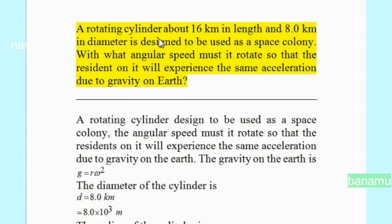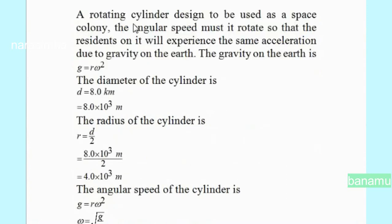A rotating cylinder about 16 km in length and 8 km in diameter is designed to be used as a space colony. With what angular speed must it rotate so that the residents on it will experience the same acceleration due to gravity on Earth? The gravity on Earth is given by g equals r omega squared.